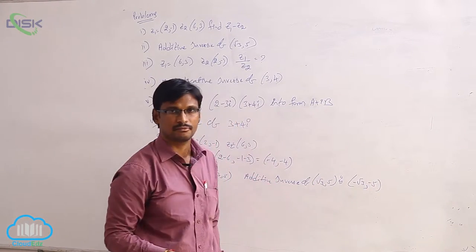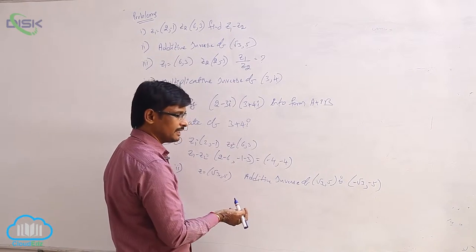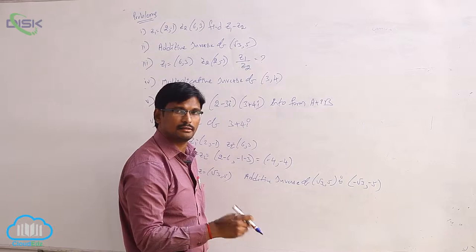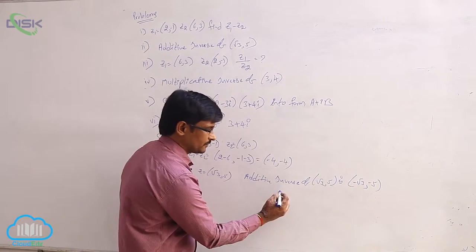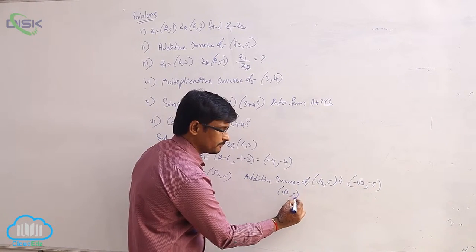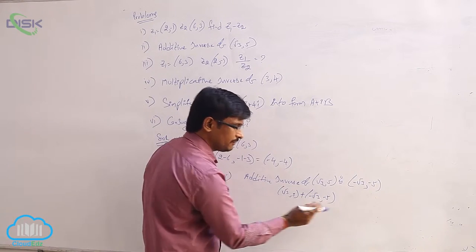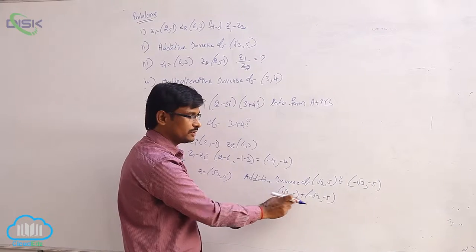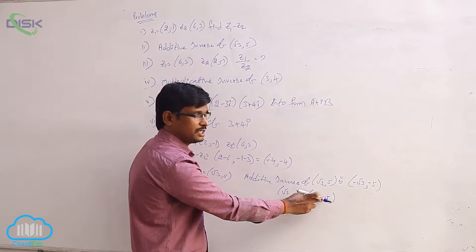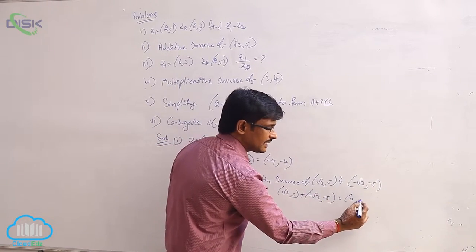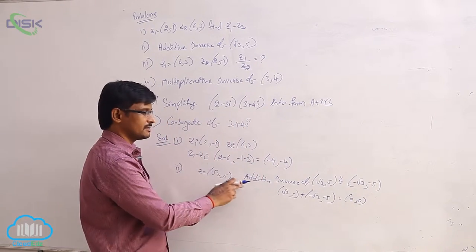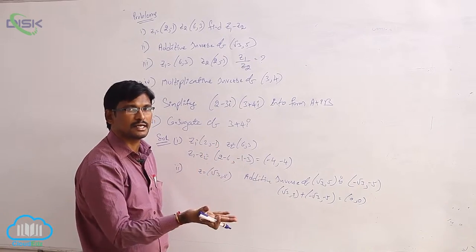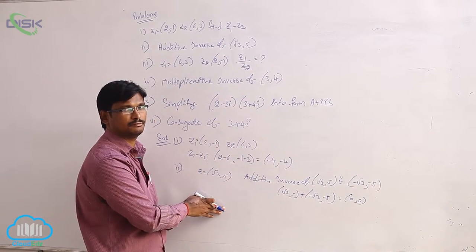We know that in the additive property, if you add these two you will get the additive identity: (√3, 5) plus (−√3, −5). Adding corresponding elements: √3 − √3 = 0 and 5 − 5 = 0, giving the additive identity. So additive inverse simply means writing the opposite signs of the given complex number.